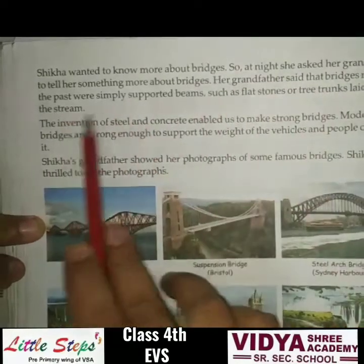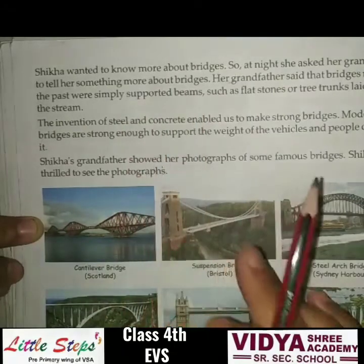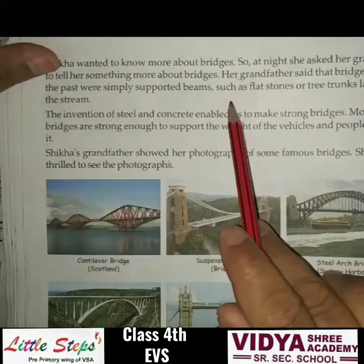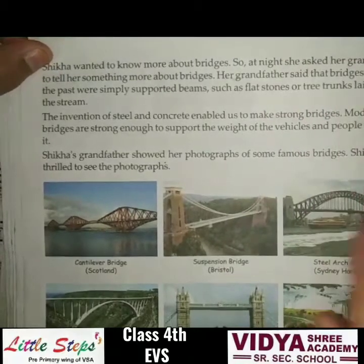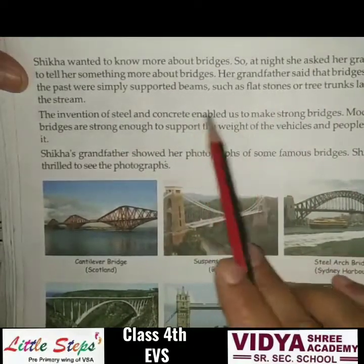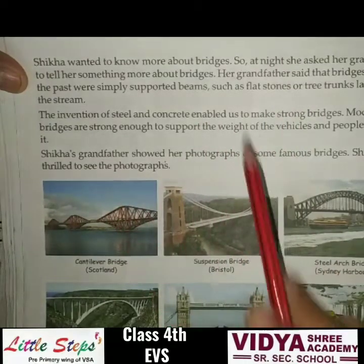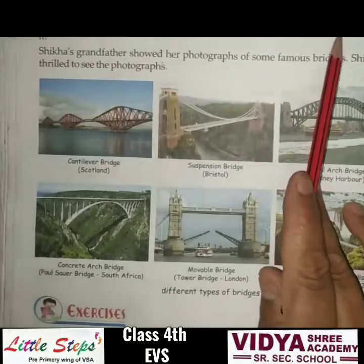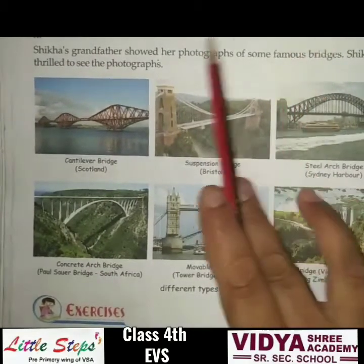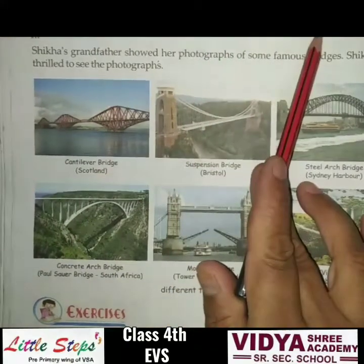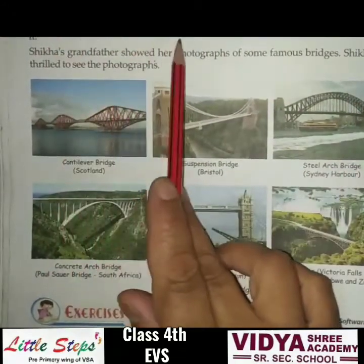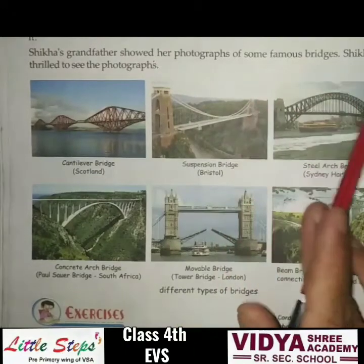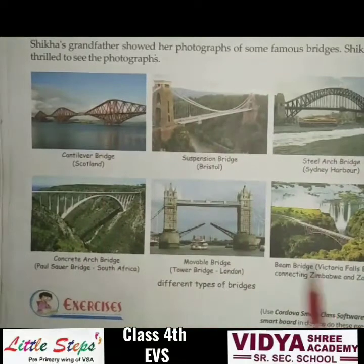Shikha's grandfather said that the bridges made in the past were simply supported beams, such as flat stones or tree trunks laid across streams. The invention of steel and concrete enabled us to make strong bridges. Modern-day bridges are strong enough to support the weight of vehicles and people crossing them. Shikha's grandfather showed her photographs of some famous bridges, and she was thrilled to see them.